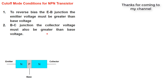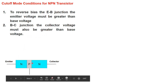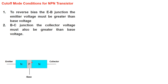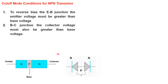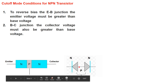I will briefly explain you, so the upcoming saturation mode and active mode will be very easy for you to understand. This is the simple diagram of an NPN transistor — emitter is N type, base is P type, and collector is also N type. Now you can see that the junction between the emitter and the base must be reverse biased and the junction between the base and the collector must also be reverse biased. So how can we put these two junctions in reverse biased condition? Let's divide this base into two parts — it becomes two diodes connected with each other.